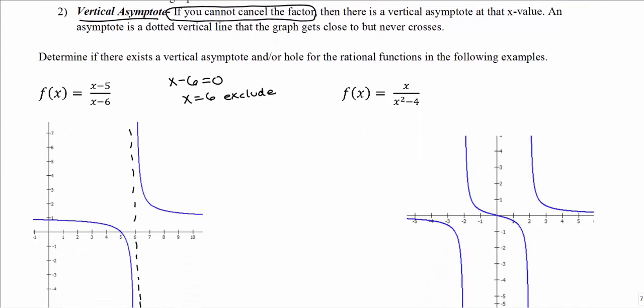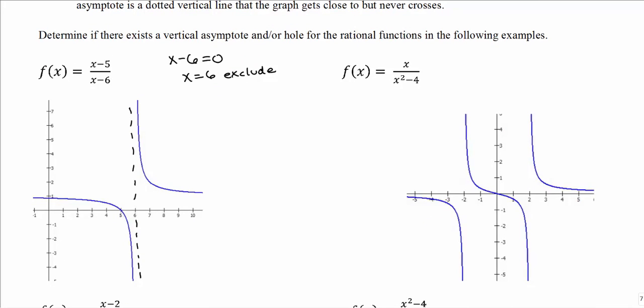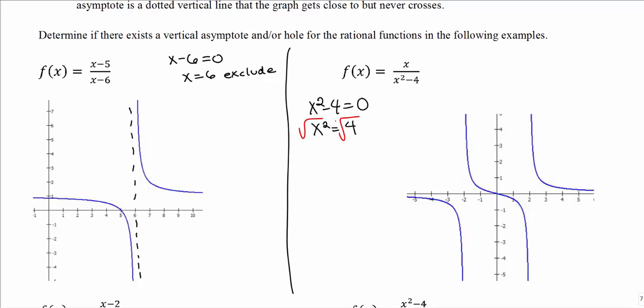Next, f(x) = x / (x² - 4). To find the domain, set the denominator equal to zero. Add 4 to both sides to get x² = 4, then take the square root of both sides — remembering plus or minus — giving x = ±2. So these two x values, positive 2 and negative 2, must be excluded from the domain.